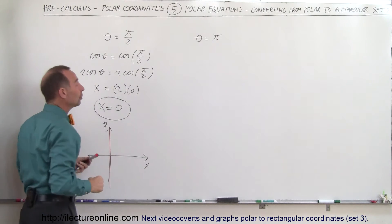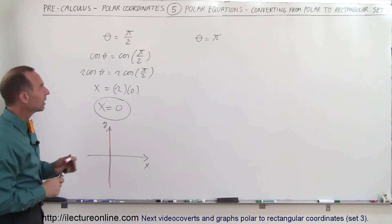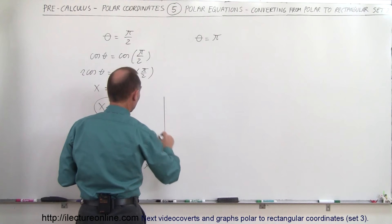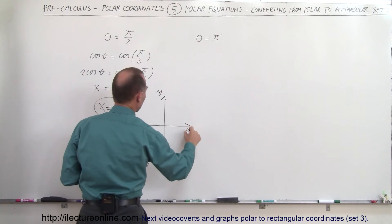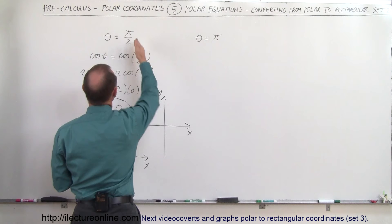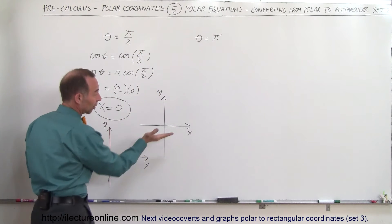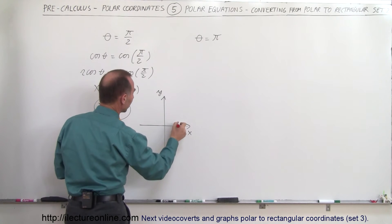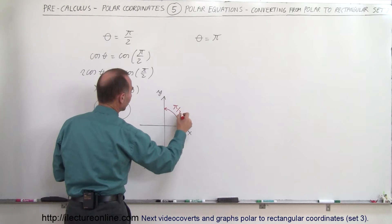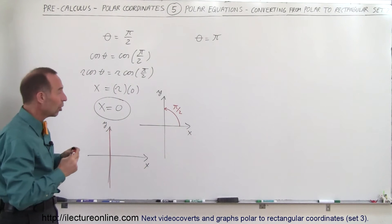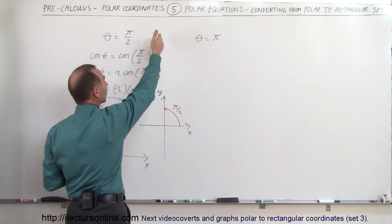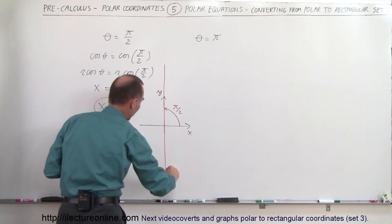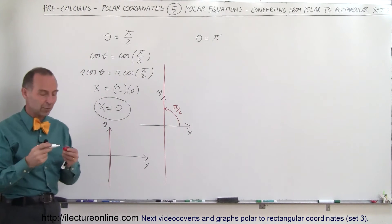So x equals 0 is that line, which means theta equals pi over 2 is also that same line. Another way of looking at it: if we graph this in polar coordinates without converting, we find the angle of pi over 2, which is 90 degrees. Starting from the positive x-axis, we move through an angle of 90 degrees. Since r is not specified, it can go infinitely in both directions, giving us that straight line right on top of the y-axis. Either way, we get the exact same graph.